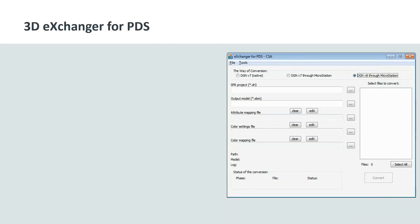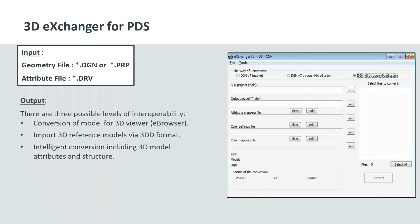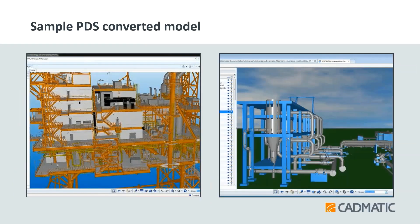The interface for PDS works in more or less the same way as PDMS. In this case, the input files are .dgn or .prp as the geometry file and .drv as the attribute file. These geometry and attribute files can be kept in one folder when loading, as they get auto-synced. You attach them, set the output path, configure attribute mapping, color setting and color mapping, then select which DGN files to convert and click the convert button. The output is a CADMATIC Review file and a 3D file with or without attributes, depending on your selection.